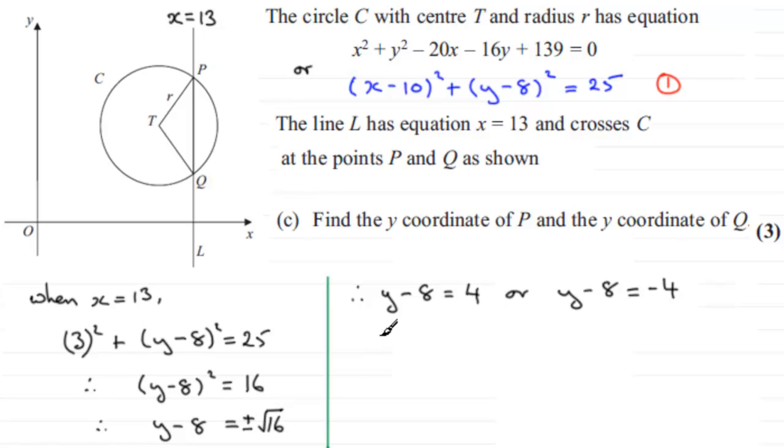So for this one, if we add 8 to both sides, we end up with y equals 4 plus 8, which is 12. Or if we add 8 to this one, we end up with 8 minus 4, which is 4. And it did ask for the y coordinate of P and the y coordinate of Q. So therefore the y coordinate, just write this in, of P. Well, what's that going to be? Well, it obviously is a greater y value than this one here. So the y coordinate of P must be 12. So we'll just say is 12. And we'll say of Q is, and it's got to be 4.